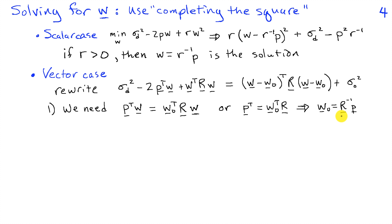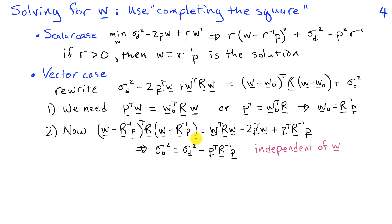We'll talk in the next slide about the conditions under which R inverse exists. So if I multiply this out, having substituted for W0, I see that my perfect square becomes W transpose Rw. Well, that's one of the terms I originally had, minus 2P transpose W, which is the other term that I originally had, plus P transpose R inverse P. And this is an extra term. So what we need to do to make the left-hand side up here equal to the right-hand side is set sigma 0 squared equal to sigma D squared minus this extra term we introduced when we wrote this as a perfect square.